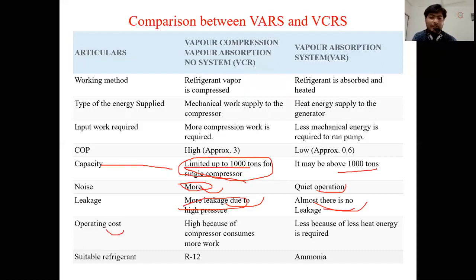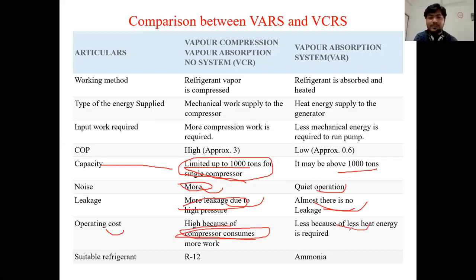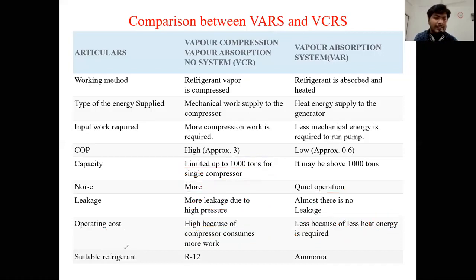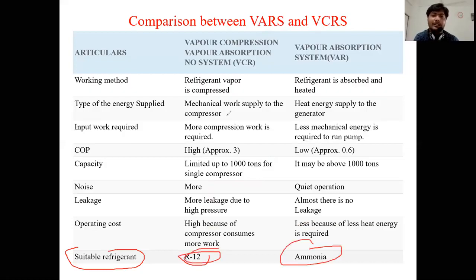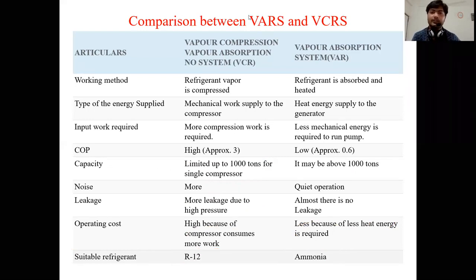Operating cost — VCRS has higher operating cost because the compressor consumes more work; VARS has lower operating cost because heat energy — such as waste heat from a power plant — is used. Suitable refrigerant for VCRS is R12 (Freon); for VARS, NH3 (ammonia) is the suitable refrigerant. Thank you so much.